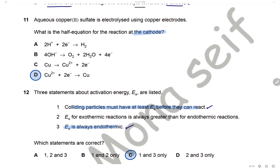Question 11: Aqueous copper sulfate is electrolyzed using copper electrodes. What is the half ionic equation for the reaction at the cathode? At the cathode, copper ions are attracted because they are positive ions; they gain two electrons to form copper metal. The answer is D.